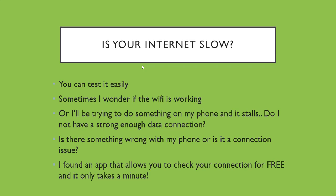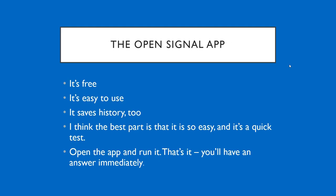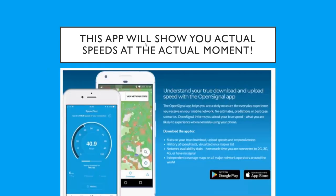I found an app that allows you to check your connection for free and it really only takes a minute — less than a minute. It's called the Open Signal app. It's free, it's easy to use, it saves a history of your past test sessions. It's a really quick test and you've got your answer right away — open the app, run it, that's it.